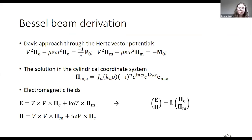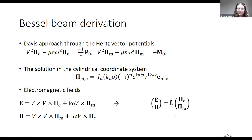One common approach for Bessel beam generation is the Davis approach using Hertz vector potentials, which are solutions of Maxwell's equations in the cylindrical coordinate system. The electric and magnetic fields can be found using two potentials — the Hertz vector potentials of electric and magnetic type — and these expressions can be written in a matrix form using the matrix operator L.